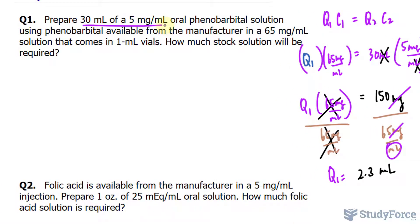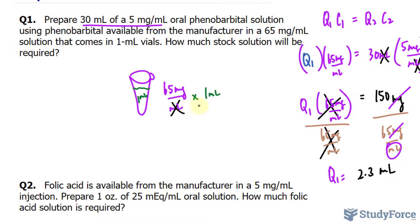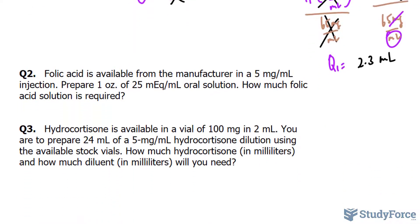Now, in case you're wondering about how much active ingredient is found in a single vial, all you do is take its concentration rated at 65 milligrams per milliliter and multiply it by its volume of 1 milliliter. The units cancel out, leaving you with 65 milligrams. So there are 65 milligrams of phenobarbital in one of these vials.